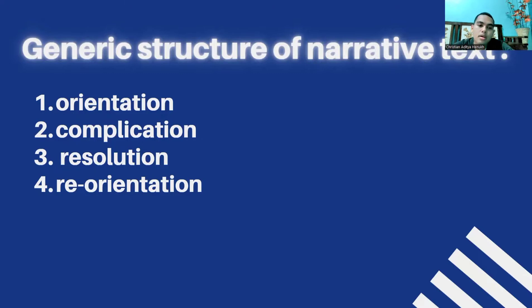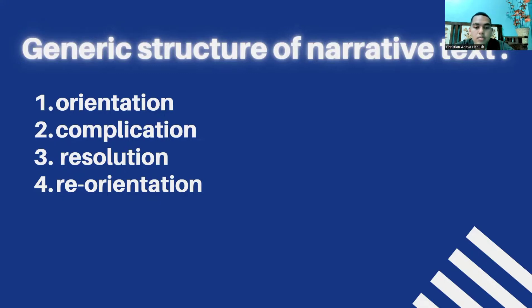Number two is complication. This section will begin to enter the paragraph that tells about the beginning of the problem of an event or incident. Because narrative text is chronological in nature, the problems that arise at the beginning will continue into a series of story lines that contain conflict, climax, and anti-climax.